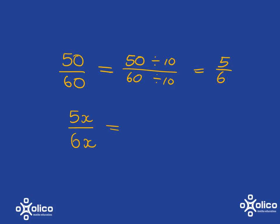And the story is going to be the same even when I get to algebra. Here, I've got 5x over 6x. If I divide the top of the fraction by x, I get 5. If I divide the bottom of the fraction by x, I get 6. So, 5x over 6x is equal to 5 over 6.